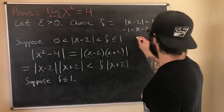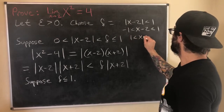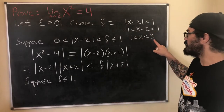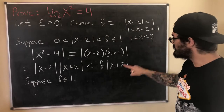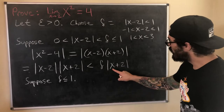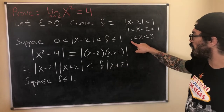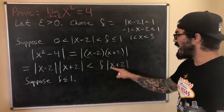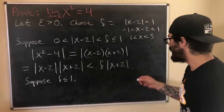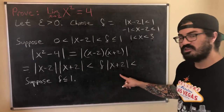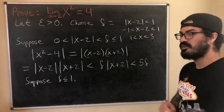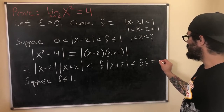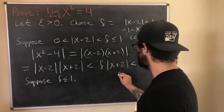Adding 2 to all three parts of the inequality gives 1 < x < 3. So if we make this assumption that delta ≤ 1, our values of x are bounded above by 3 and below by 1. That means |x + 2| is bounded below by 1 + 2 = 3 and above by 3 + 2 = 5. Since |x + 2| is bounded above by 5, we can say delta · |x + 2| is less than 5 · delta. Now we can set 5 · delta = epsilon and solve to get delta = ε/5.